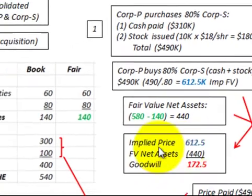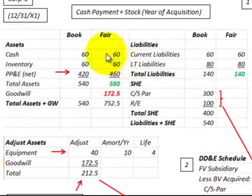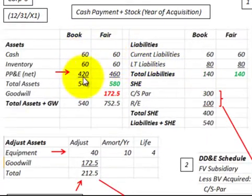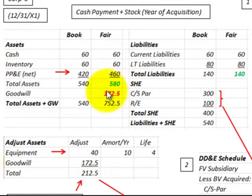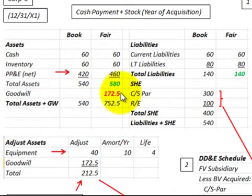Going back to the balance sheet, we've adjusted property, plant, and equipment up to its fair value. Additionally, in this transaction, we have to record goodwill of $172,500.